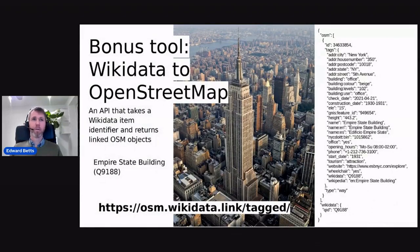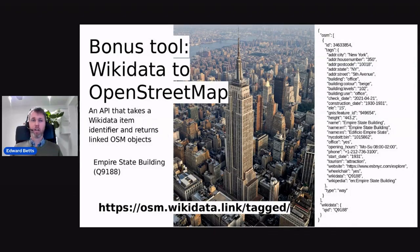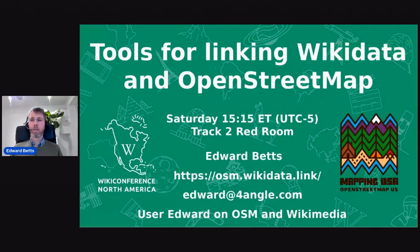I've also got a bonus tool: I've built an API for going in the opposite direction. You can give it a Wikidata QID — this example is the Empire State Building — and you get back JSON that represents the OpenStreetMap objects that match the Wikidata item. Thanks, and come and see my talk on Saturday at 3:15 p.m.